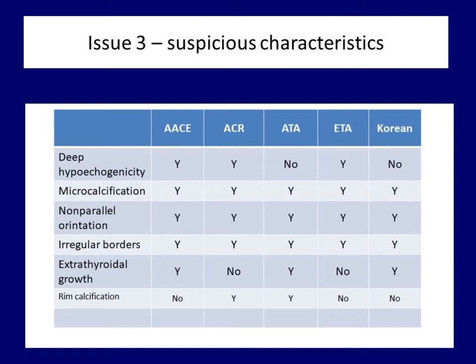The discussion of these ultrasound features is the backbone of the course. The first four features are all considered suspicious signs across the societies. The echogenicity of the nodule is the most important one. Two societies make a distinction between deep and non-deep hypoechogenicity, and those that do list deep hypoechogenicity among suspicious characteristics. Societies that do not discriminate hypoechoic nodules take hypoechogenicity even more seriously — it is a necessary condition that in the presence of any other suspicious signs, the nodule is classified in the most suspicious category.